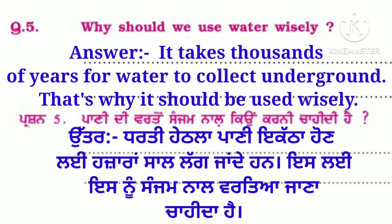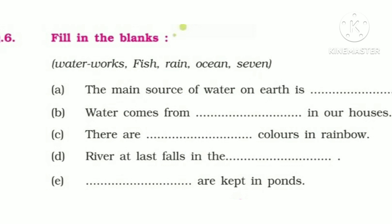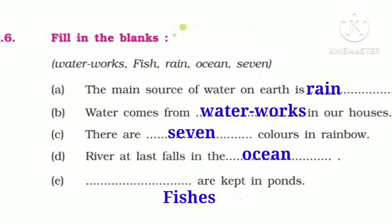Fill in the blanks. A. The main source of water on earth is rain. B. Water comes from water works in our houses. C. There are seven colors in a rainbow. D. A river at last falls in the ocean. E. Fishes are kept in ponds.